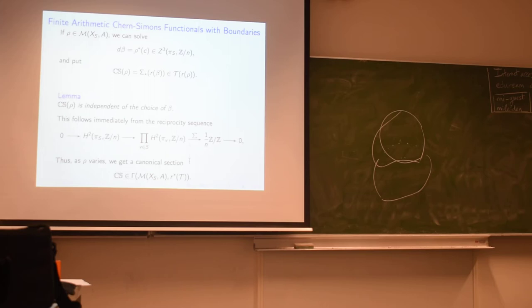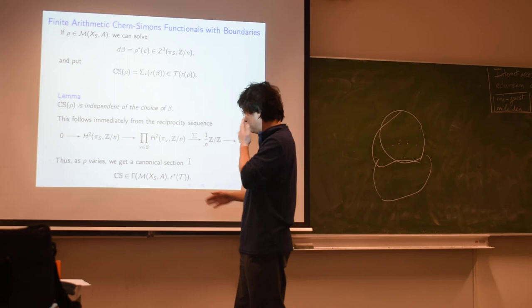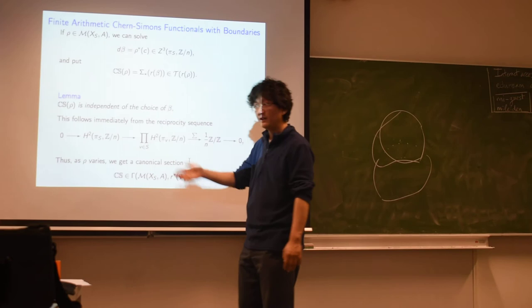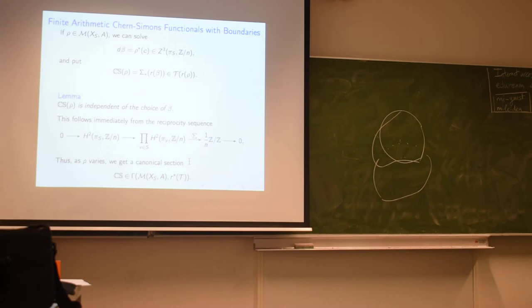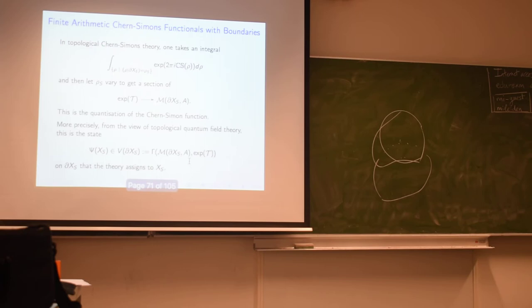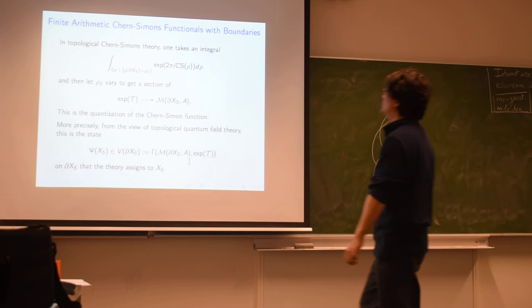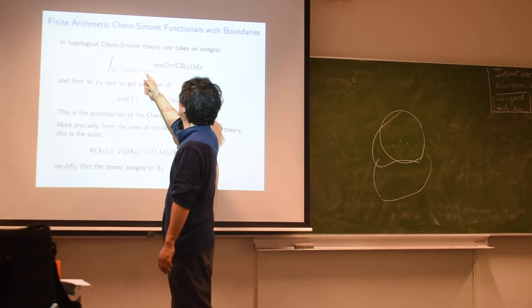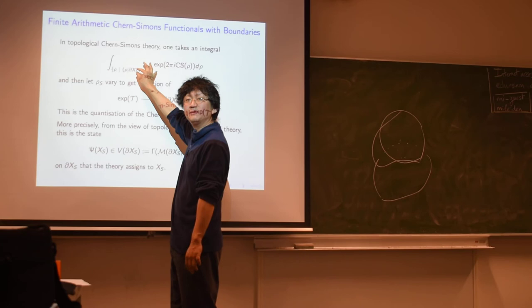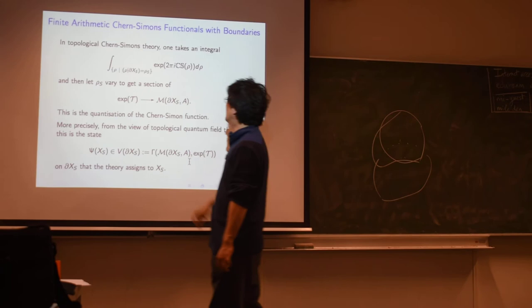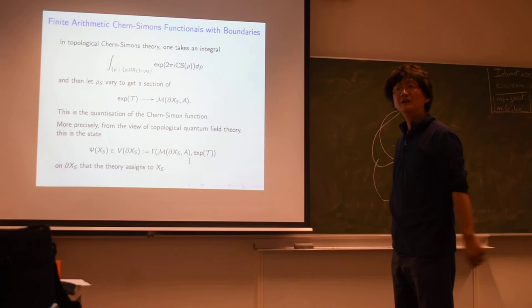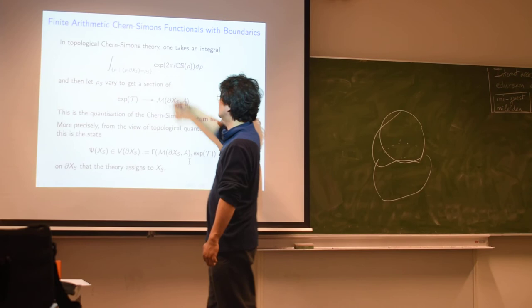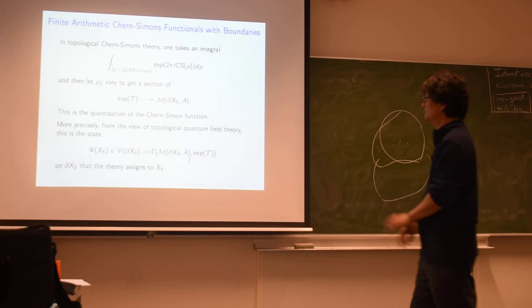And then, take the global solution and restrict it locally. And then you get an element of this torsor over the collection of local representations restricted from ρ. But what's very easy to track is that actually, this element is independent of the choice of this solution β. And that's because of this reciprocity sequence. You get a canonical element that only depends on your scheme and your representation ρ. It doesn't depend on the solution of this coboundary equation, global coboundary equation. So then, as ρ varies, you can view this as a canonical section of this torsor over the boundary moduli space, pulled back to the global moduli space. Because you're associating an element of the line of the torsor over the local moduli space for each global representation. So you get a section of that space.